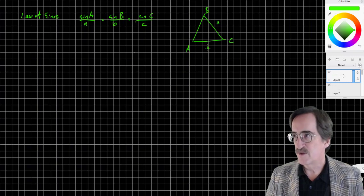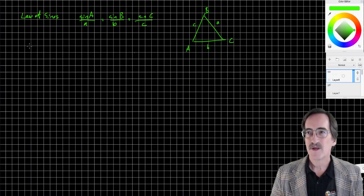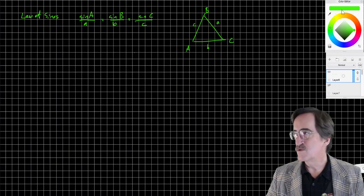Sine A over a equals sine B over b equals sine C over c, where A, B, and C are vertices of a non-right triangle. The naming convention goes that way.